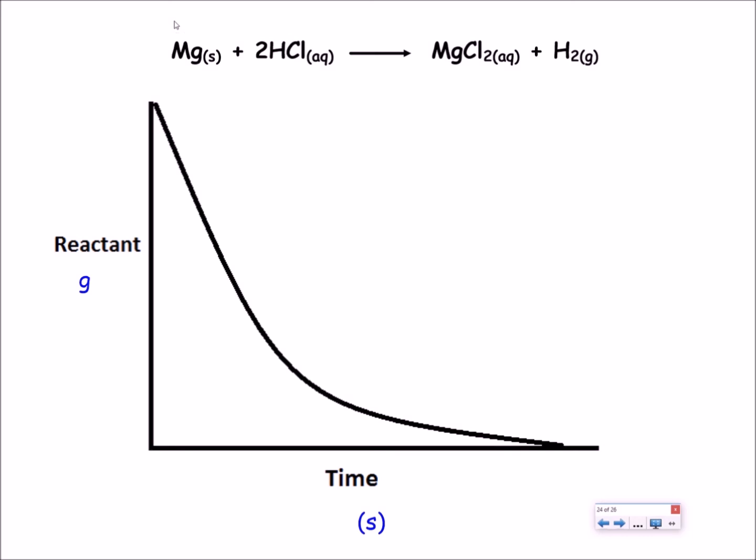A second way of working out the rate of reaction is by looking at the rate at which a particular reactant is used up. So let's look at magnesium for example. As the reaction proceeds the mass of magnesium decreases and eventually all the magnesium is completely used up at this point over here. So how do we measure the rate of reaction from this graph? Well it's exactly the same as the previous example.